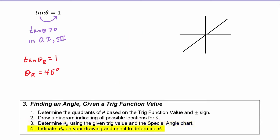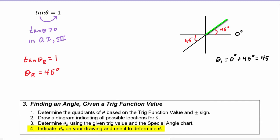Last, we put the reference angle on our drawing — 45 degrees here and 45 degrees here — and use that to determine the angles. The nearest x-axis in quadrant one is at zero, so our first angle starts at zero and goes up by 45 degrees, ending at 45 degrees. Our second angle starts at the nearest x-axis at 180 degrees, so we add the reference angle of 45 and get 225 degrees.